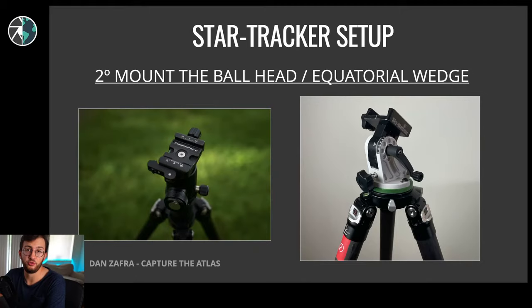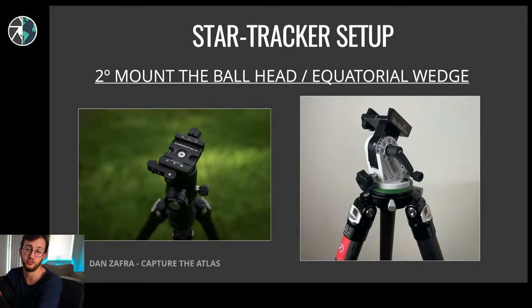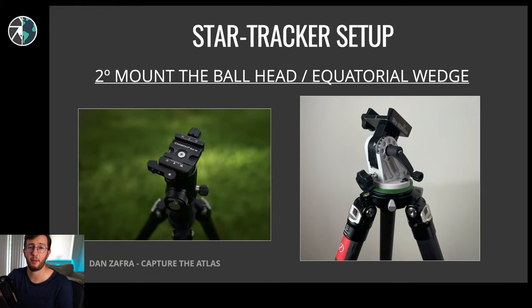One recommendation for tripods: if you are using a standard tracker, get a tripod with a base that is the same size as your wedge - that way it's completely stable. If your tripod has a narrower and smaller base, your tracker will be overlapping and with windy conditions it's going to be more difficult. Third step: slide the tracker over the ball head or the equatorial wedge. With the Motion Move, just slide the tracker. Same with the SkyWatcher and iOptron - it's a very easy process.